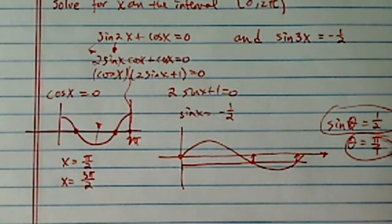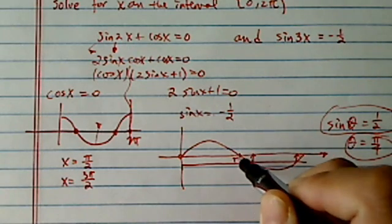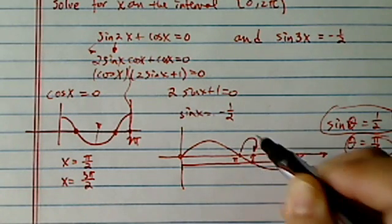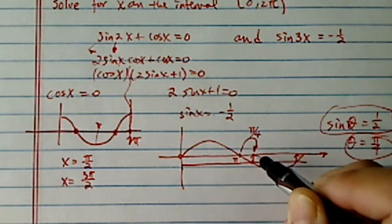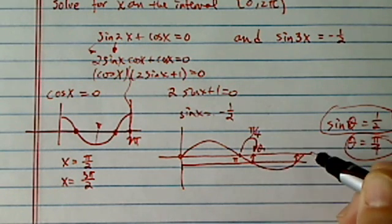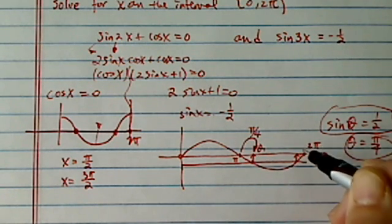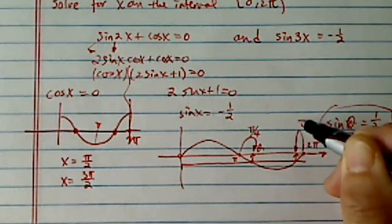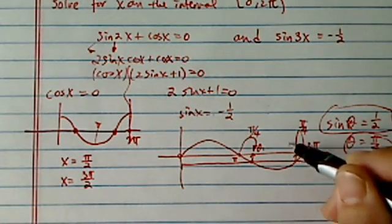How we're going to use this reference angle is here. This is π, it's π/6 distance away, it's our θ₁. And then here's 2π, and then π/6 distance away, it's our θ₂.